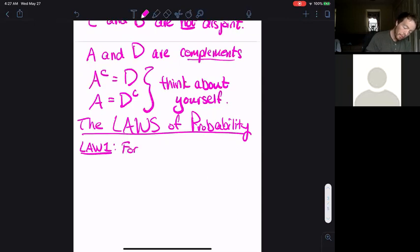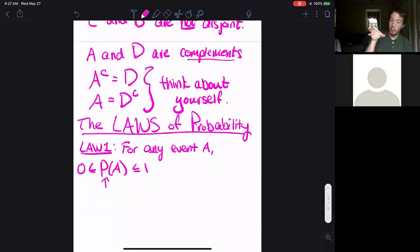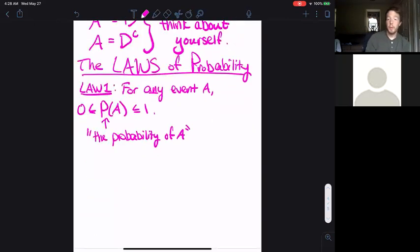Law 1: For any event A, the probability of A is between zero and one. Note this shorthand - if I do P with open parentheses, close parentheses with some event inside, we say that as the probability of A. This makes sense because as we learned before, a probability is actually a long-term proportion, a proportion of the total times that some event happens. And proportions are always between zero and one.